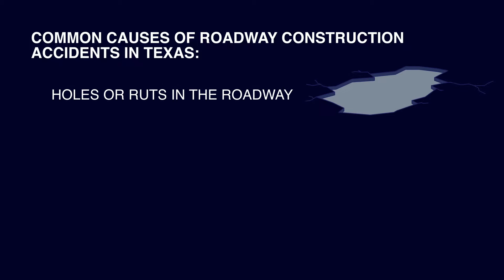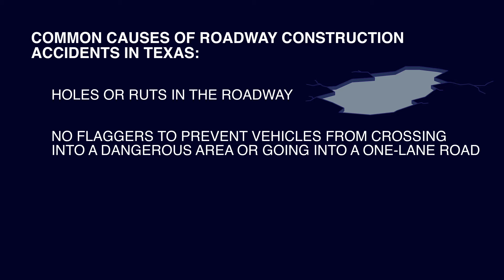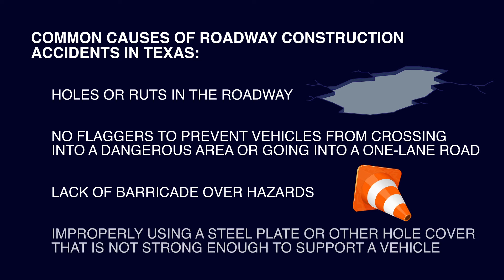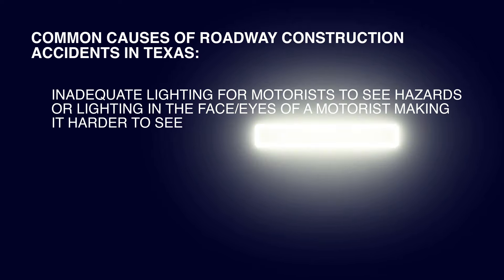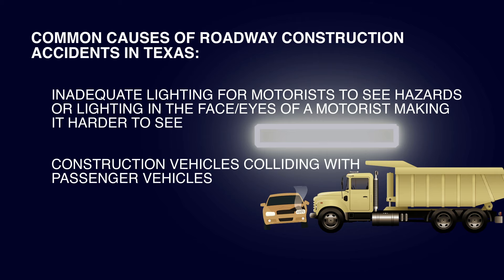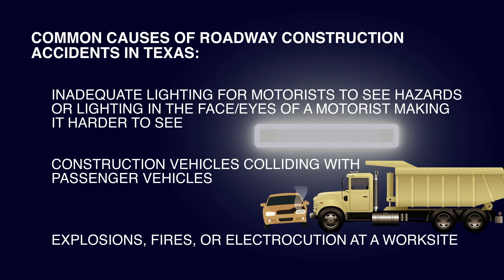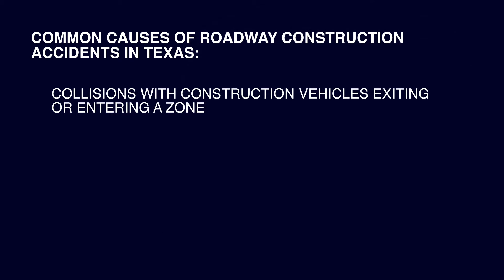Holes or ruts in the roadway. No flaggers to prevent vehicles from crossing into a dangerous area or going into a one-lane road. Lack of barricade over hazards. Improperly using a steel plate or other hole cover that is not strong enough to support a vehicle. Inadequate lighting for motorists to see hazards, or lighting in the eyes of a motorist making it harder to see. Construction vehicles colliding with passenger vehicles. Explosions, fires, or electrocution at a work site. Collisions with construction vehicles exiting or entering a zone.